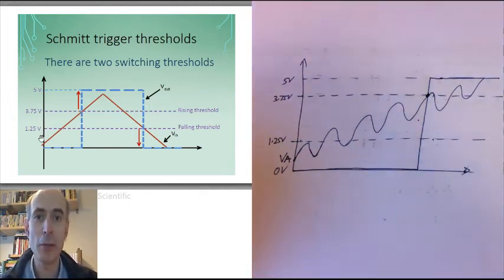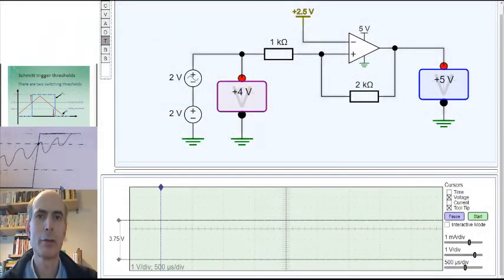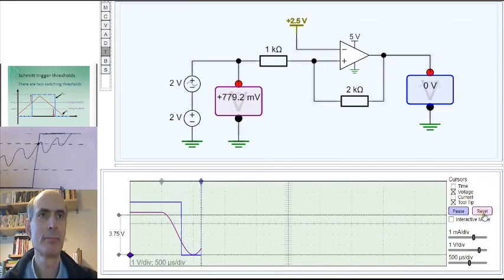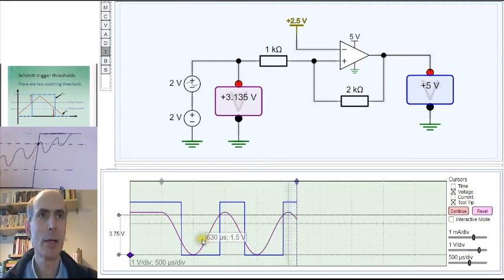We can see this circuit working in the simulator as well. Here I've built the circuit, and the input is a 2 volt zero to peak sine wave with a 2 volt offset. So it's going to be oscillating between 0 and 4 volts. And that's going to feed into our comparator Schmitt trigger circuit, which has those two thresholds at 1.25 volts and 3.75 volts. And let's see what happens. As you can see, the output of the comparator goes low only when the input goes below the lower switching threshold of 1.25 volts, and then only goes high again when the input goes above the higher switching threshold, which at the moment is set to 3.75 volts.